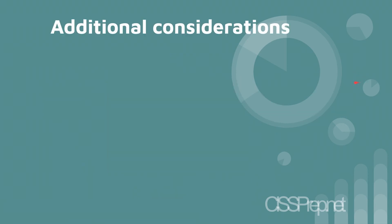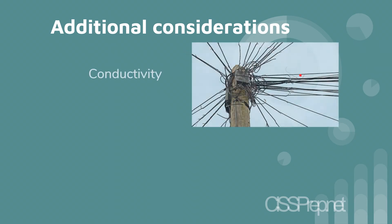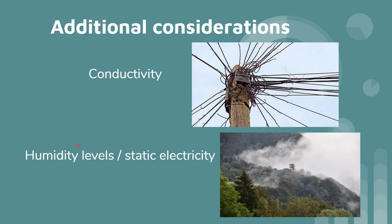A lot of the concepts in the physical security section are very common-sense. Some additional considerations you may not have heard of: conductivity is affected by humidity levels, which can contribute to electrical conductivity. So if you have open wires or a lot of electronics in general, you want good humidity control — something that prevents condensation. You also don't want it too dry, because if things are too dry you'll get static electricity. So you want to be able to control that humidity level.